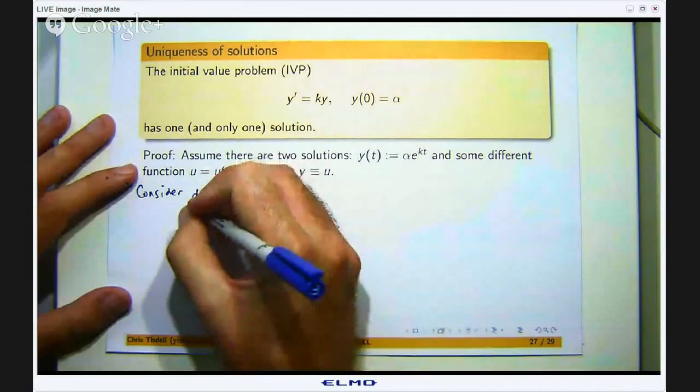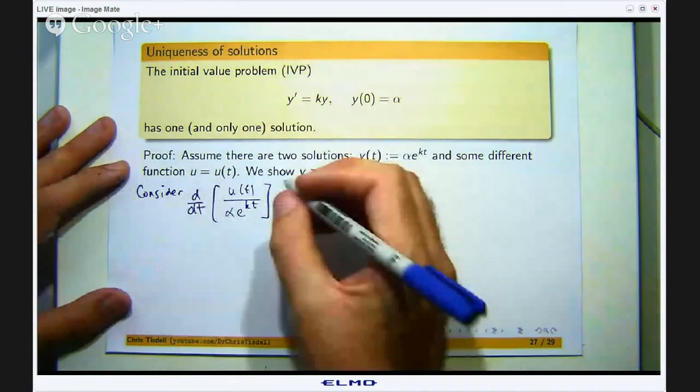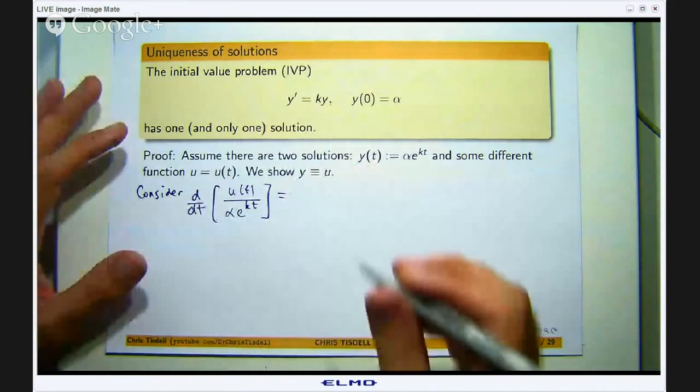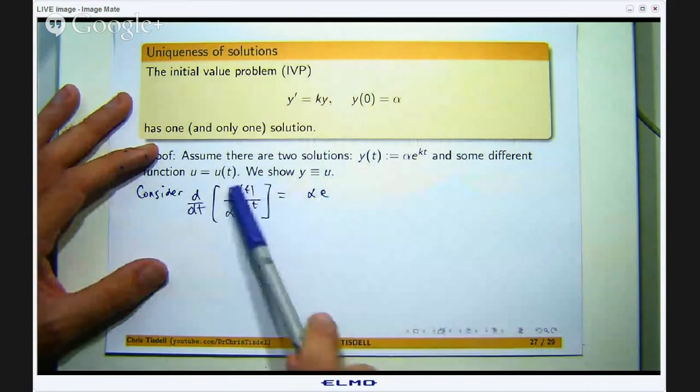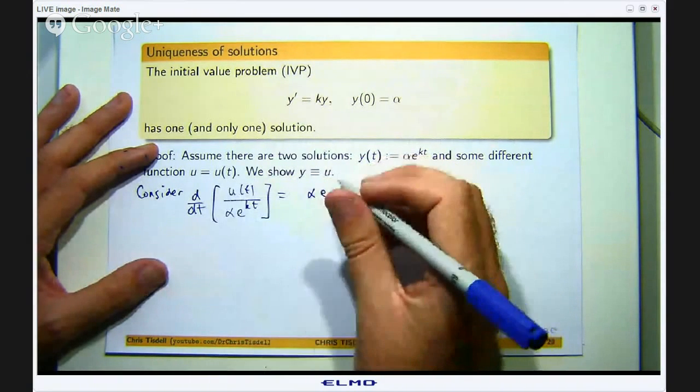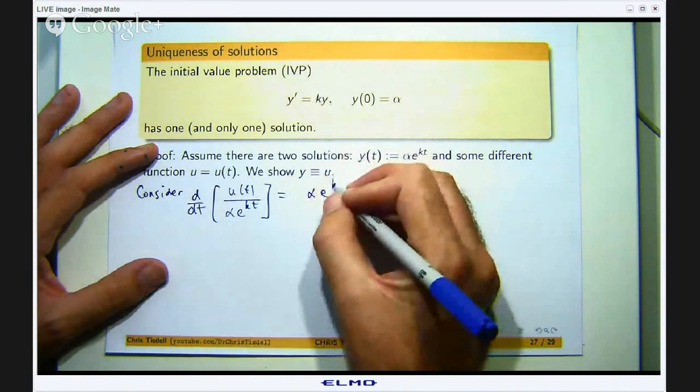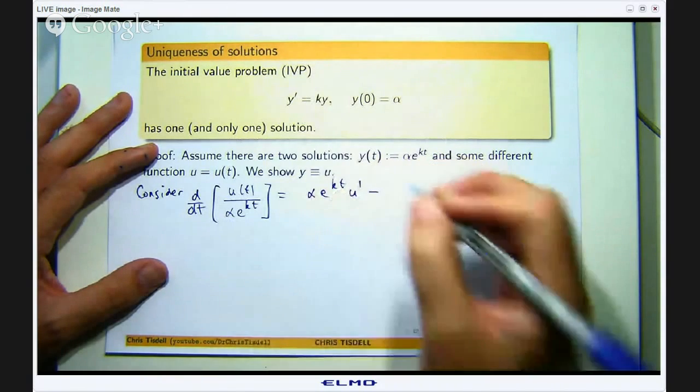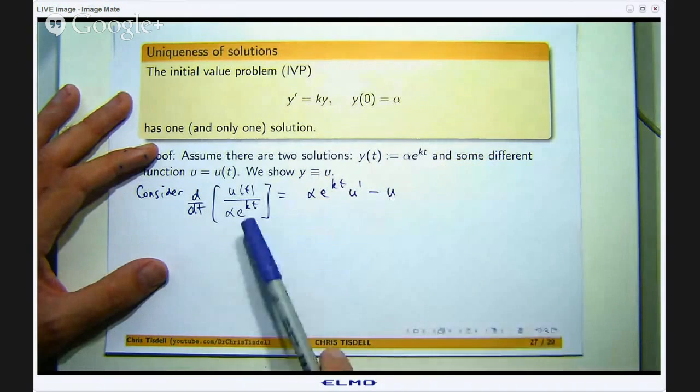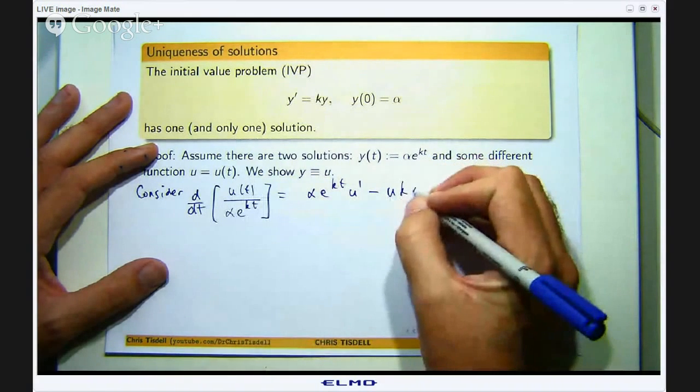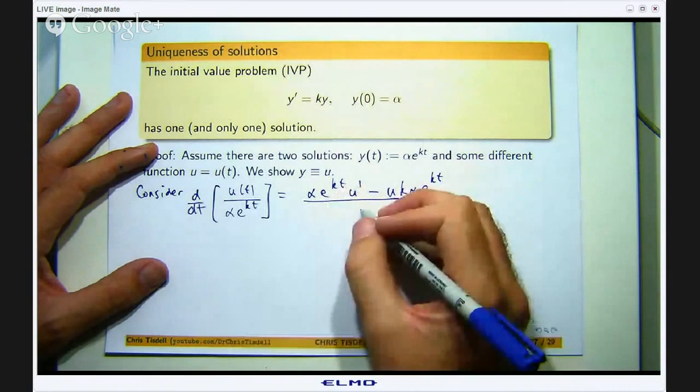Okay so let me differentiate this using the quotient rule. So if I apply the quotient rule here, I take the derivative of what is down here and multiply it with this, then minus the derivative of what is down here multiplied with this. So u', then minus the derivative of the denominator, k comes to the front, and then it is all over the square of the denominator.